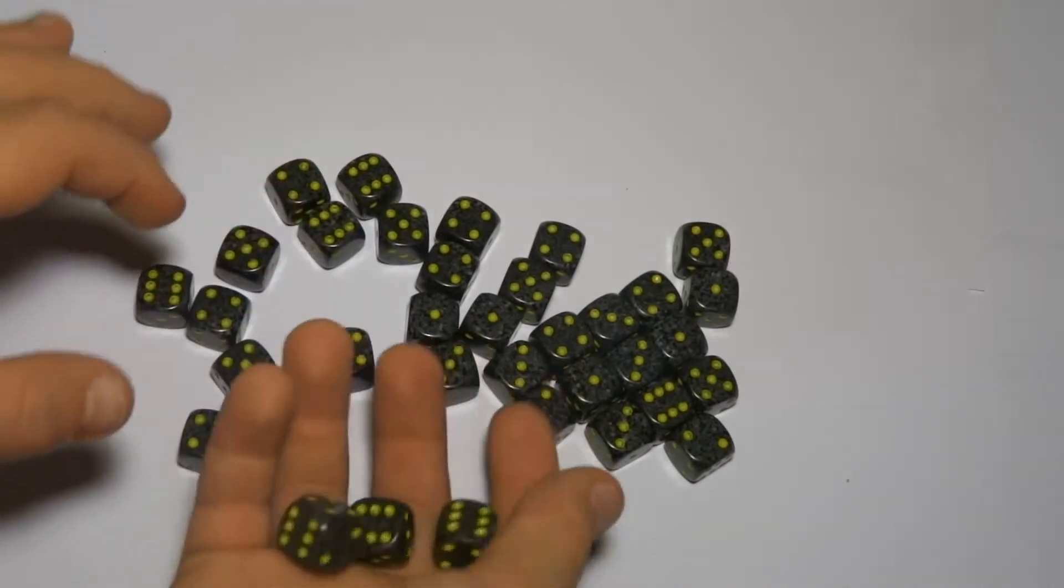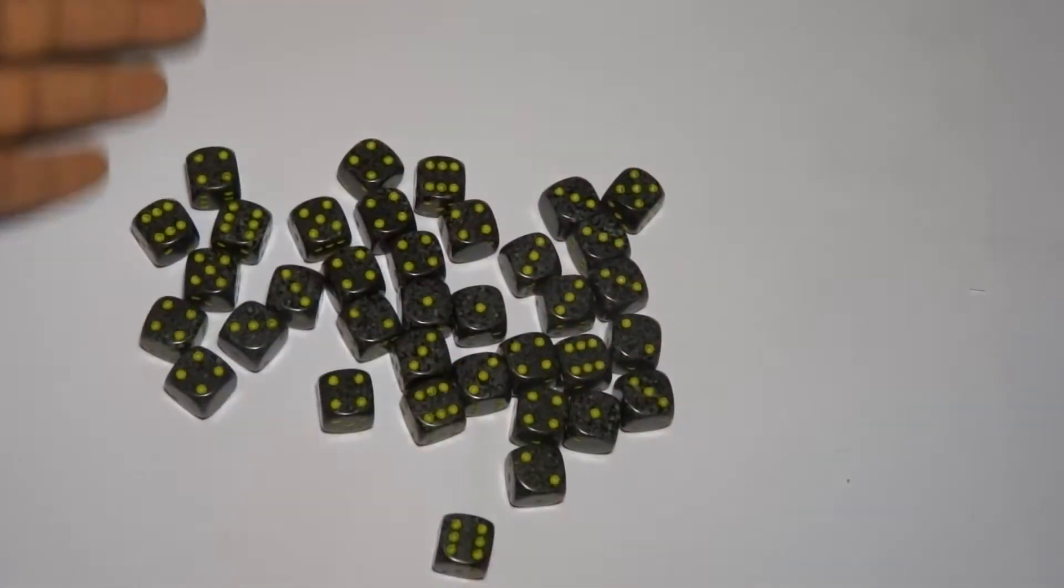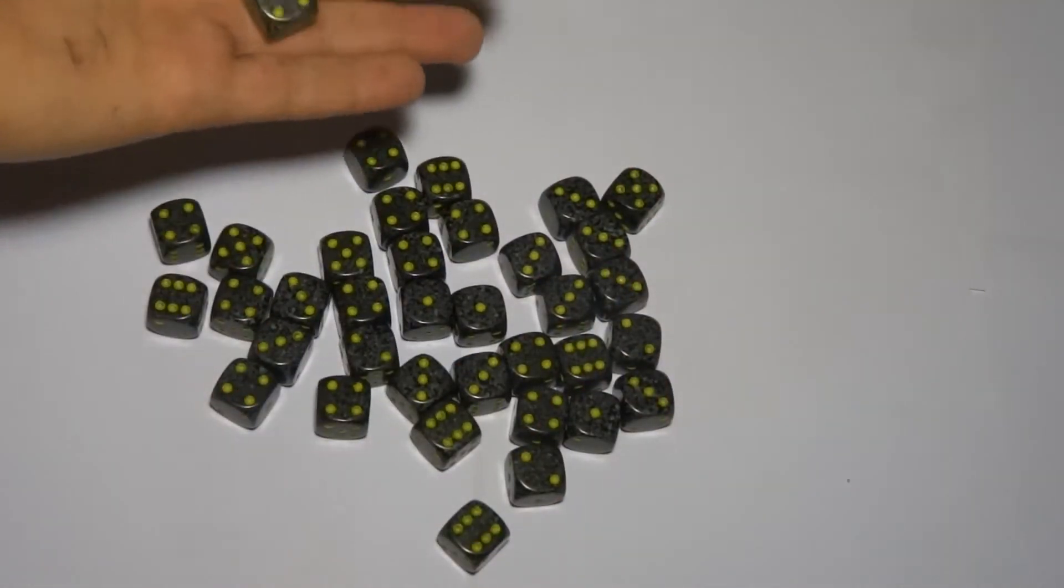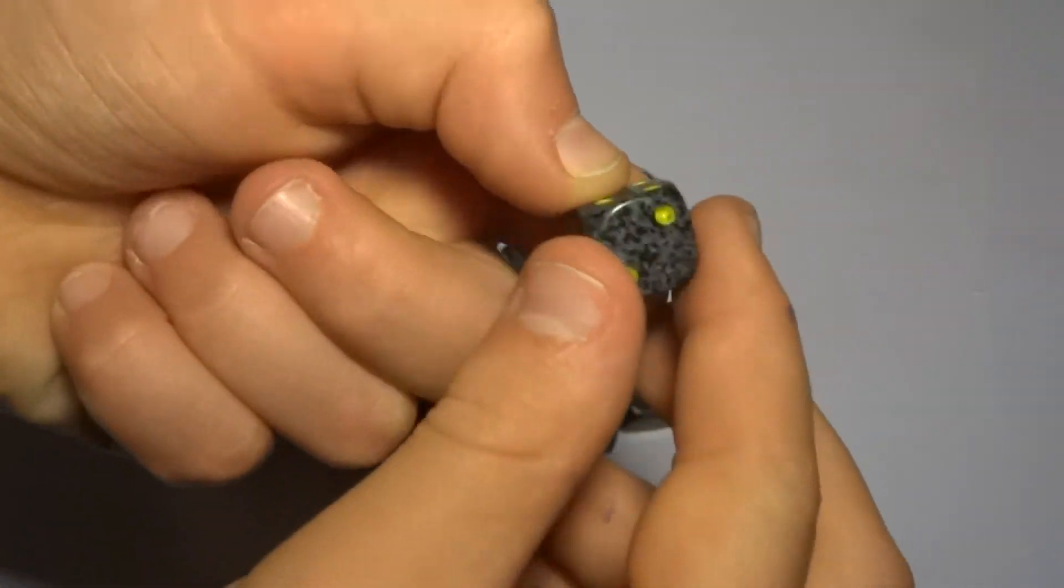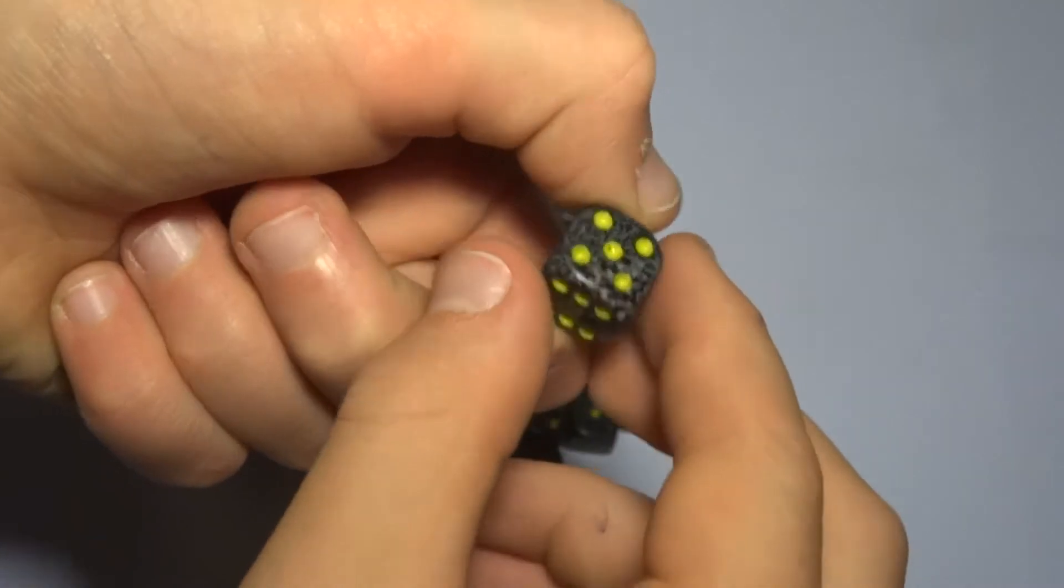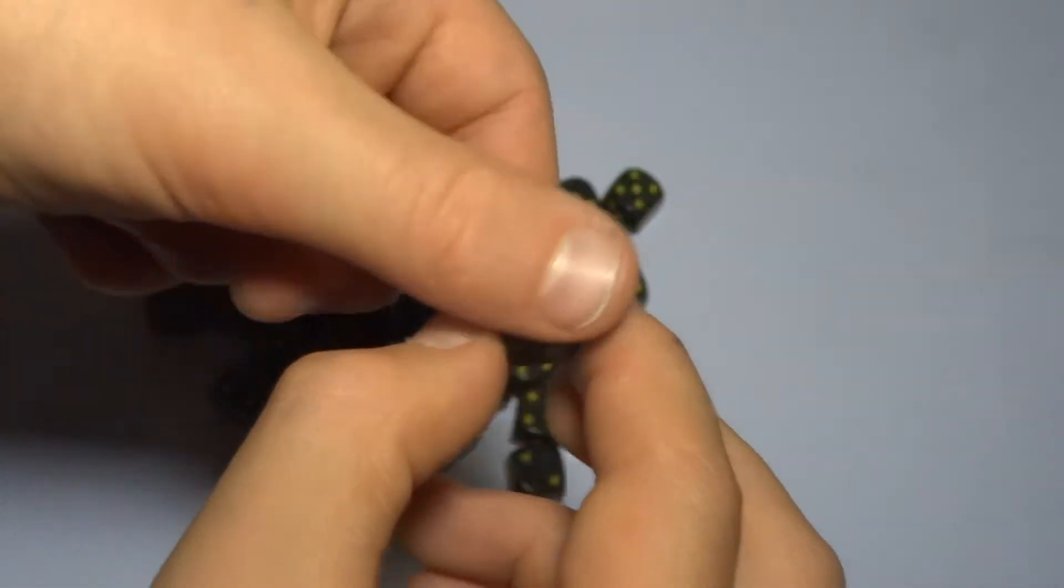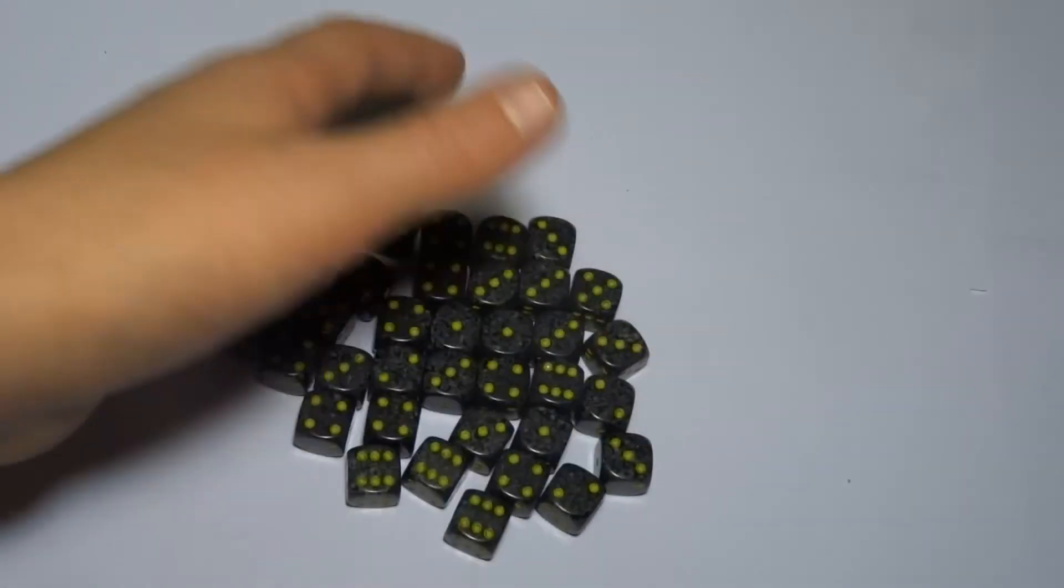As you can see I've just got some basic dice in front of me, nothing special. There's the 1 side, 2 side, 3 side, 4 side, 5 side, 6 side. They're all identical.